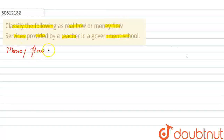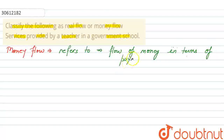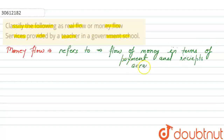Money flow refers to — if we talk about the definition — it refers to flow of money in terms of payment and receipt. Like, if you purchase any services or any goods for consumption, you make a payment. That is called money flow — in terms of payment and receipt across the different sectors of the economy.